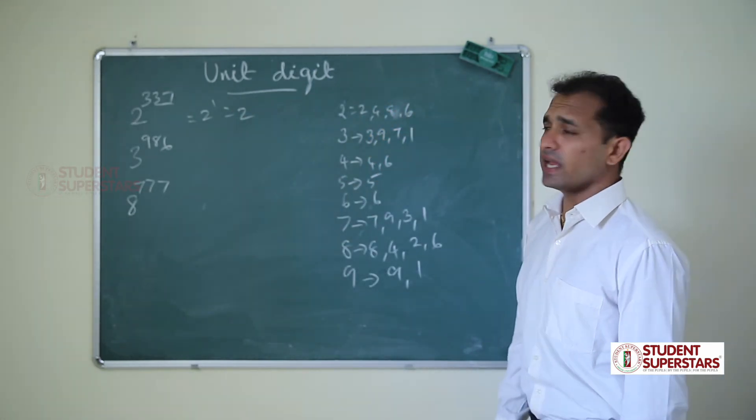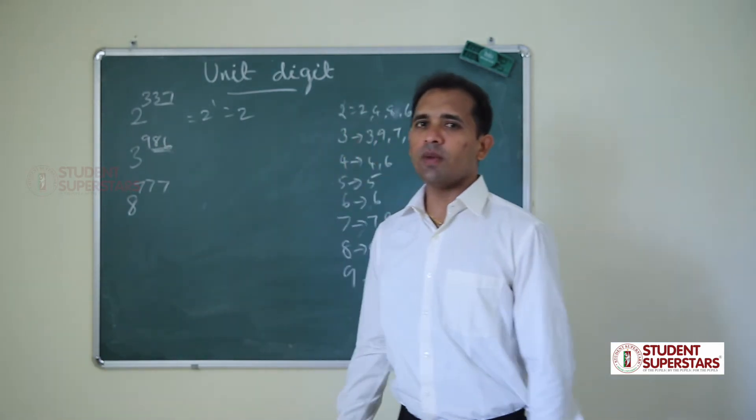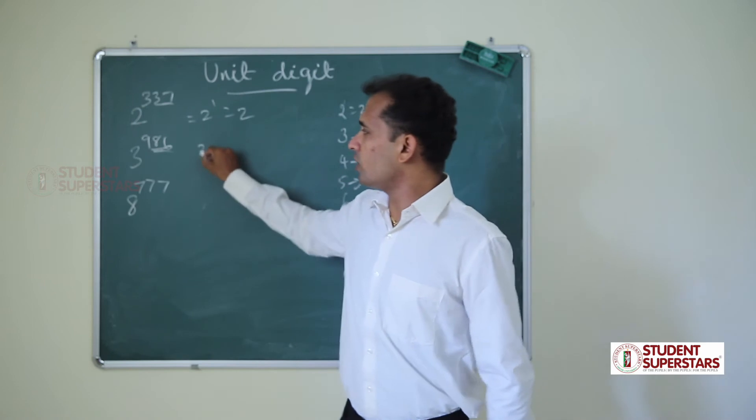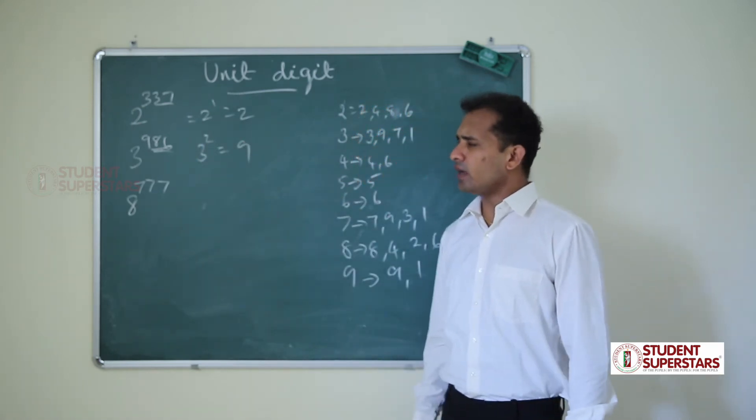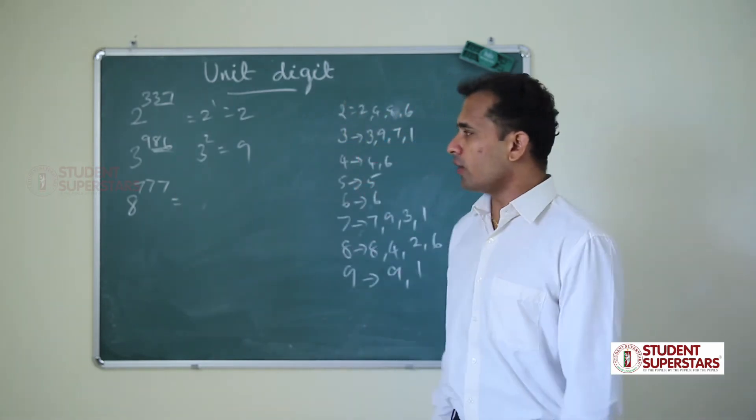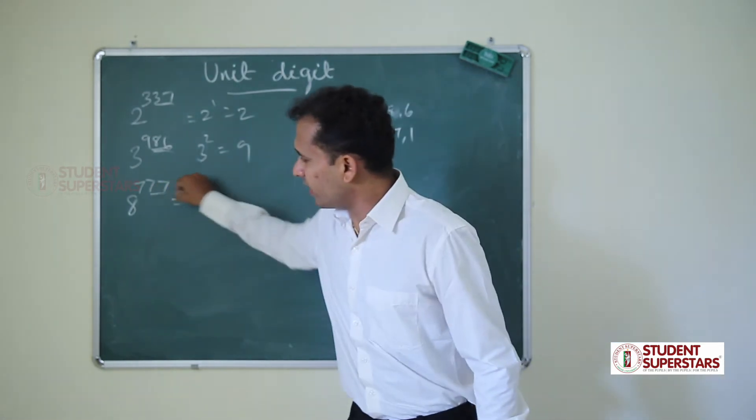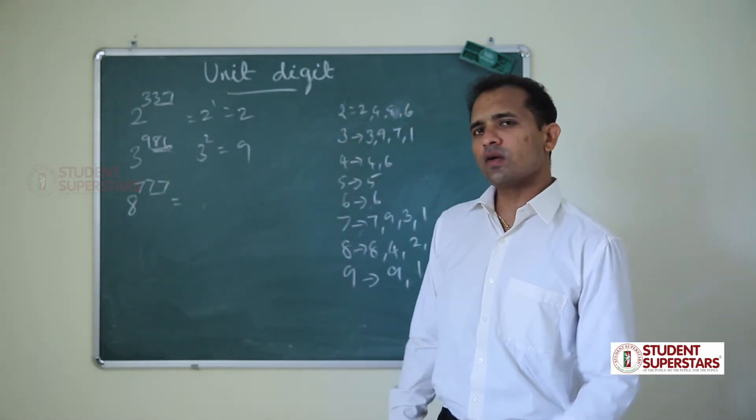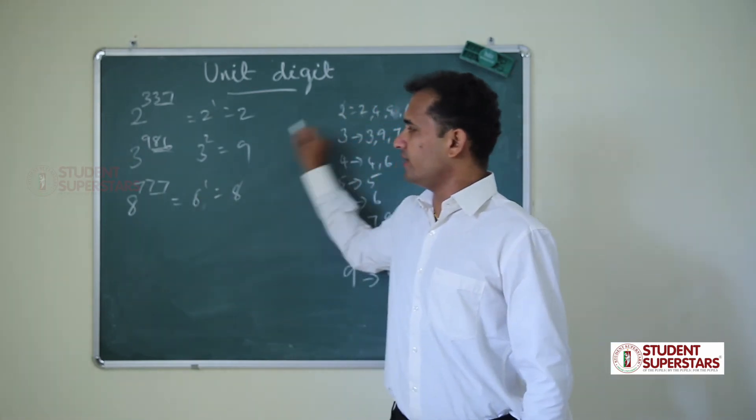Next, 3 power 986. 3 has a power cycle of 4, so 86 by 4 remainder is 2. So 3 power 2 which is 9. Next, 8 power 777. Power cycle of 4 is 8, 4, 2, 6. So 77 divided by 4, remainder is 1. 76 plus 1, so 8 power 1 is 8.